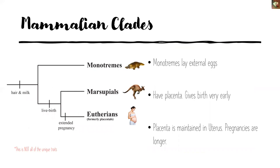Within the mammalian clade, there are three subclades defined by how they give birth. Monotremes lay their eggs externally. Marsupials have a placenta and give birth very early, with animals like kangaroos as examples. Eutherians maintain the placenta in the uterus with a very complex reproductive system, so pregnancies tend to be longer. It's worth noting this isn't all the traits distinguishing these clades — how they give birth is the defining trait being emphasized here.